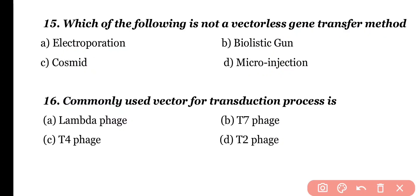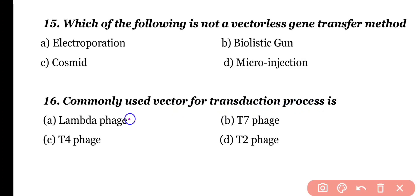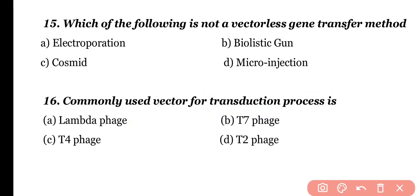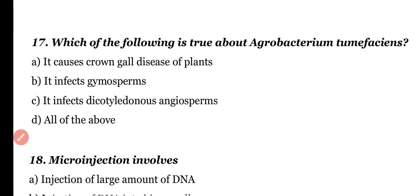Question 16. Commonly used vector for transduction process is: lambda phage, T7 phage, T4 phage, or T2 phage. Correct answer is option A. Lambda phage is commonly used as a vector for the transduction process.